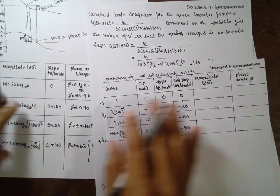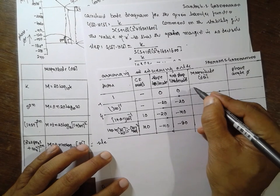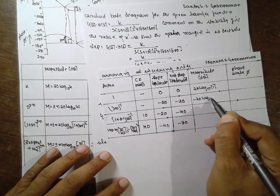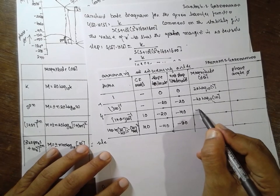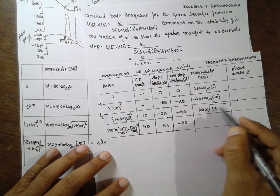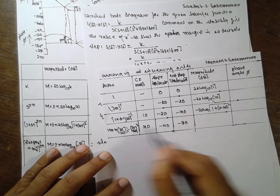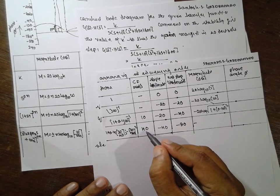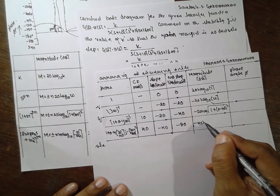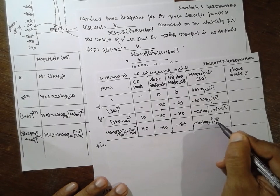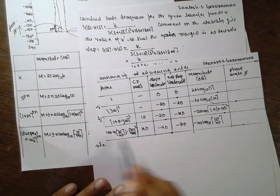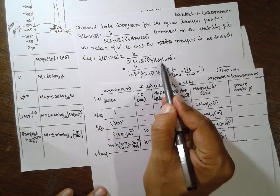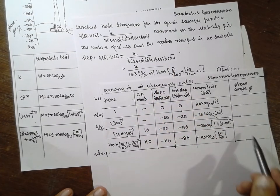Now the magnitude column. For constant: 20 log₁₀(1). For jω: minus 20 log₁₀(ω). For (1 + 0.1jω): minus 20 log root(1 + (0.1ω)²). For the quadratic term: minus 40 log₁₀(ω/40), because it lies below the line — if it were above, take positive sign. Now for the phase angle column.